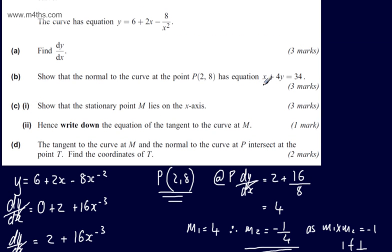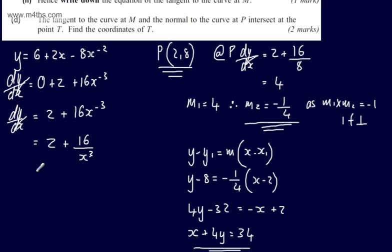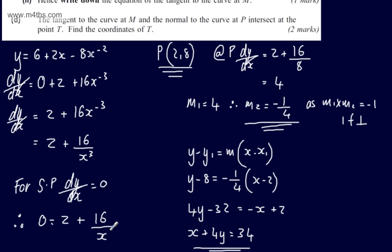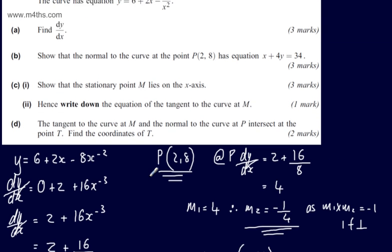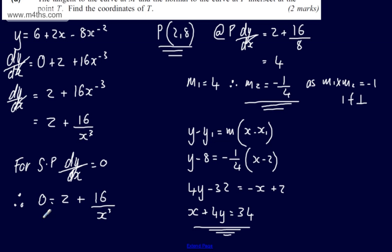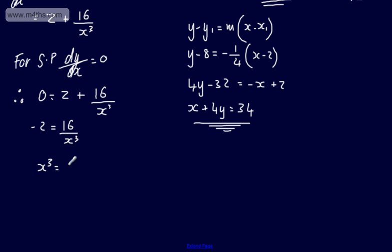We now move on to part C. For three marks, we're asked to show that the stationary point M lies on the x-axis. At a stationary point, dy/dx = 0. Therefore 0 = 2 + 16 over x cubed. Subtracting 2 from both sides: −2 = 16 over x cubed. Rearranging: x cubed = 16 over −2 = −8. Taking the cube root of both sides, x = −2.